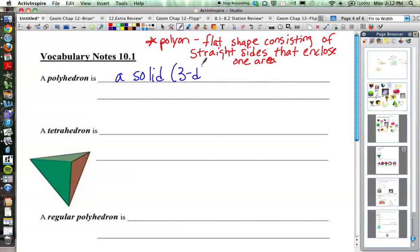So a solid, meaning a 3D, three-dimensional shape. A solid formed by polygons that enclose a single region of space.